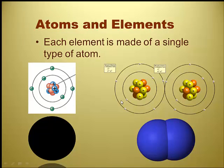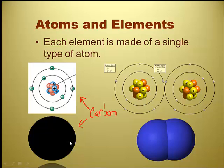Atoms and elements: every element on the periodic table is made up of a single type of atom. Elemental carbon is only made up of carbon atoms — six protons, six electrons, and six neutrons. The picture on the right shows elemental nitrogen gas, which is a diatomic element — 'di' meaning two — because two nitrogen atoms are bonded together. Even though there are two of them, they're the same type of atom.